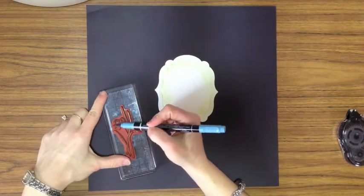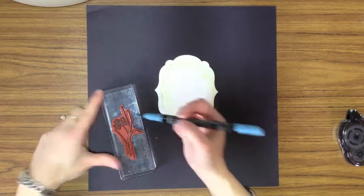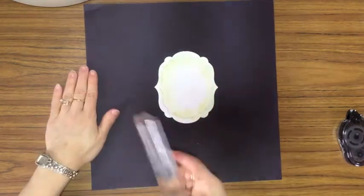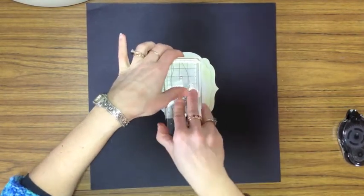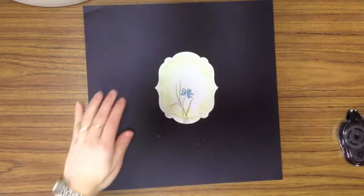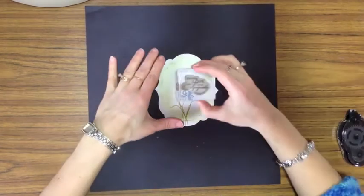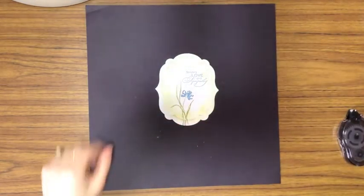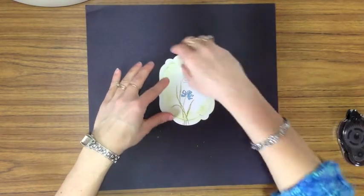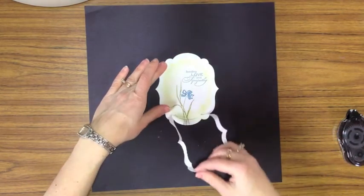Then I'm going to use the Marina Mist for the flower itself. Okay, let's go ahead and stamp this - this is gonna go right there. I'm gonna add my greetings, and I'm gonna use the Marina Mist ink like this.